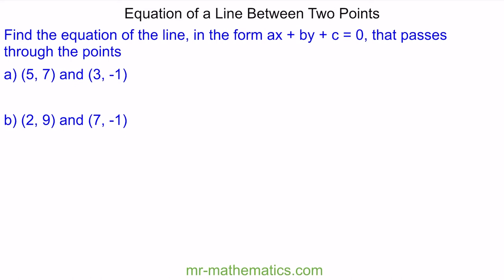Welcome to our lesson on finding the equation of a line between two points. We're going to begin by finding the equation of a line that passes between the points (5, 7) and (3, -1), and we'll write this equation in the form ax + by + c = 0.